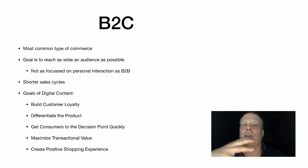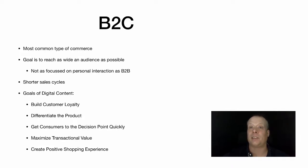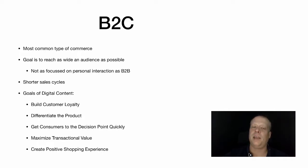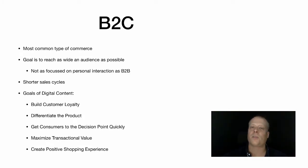Each of these types is conducted differently online, which is why we spend time splitting them up. B2C is obviously the most common type of commerce online. The goal is to reach as wide an audience as possible since you're trying to sell to as many people as possible. It's not as focused on personal interaction as B2B, and there are shorter sales cycles — the distance between when a person first makes contact with a company and when they make a purchase is much shorter.